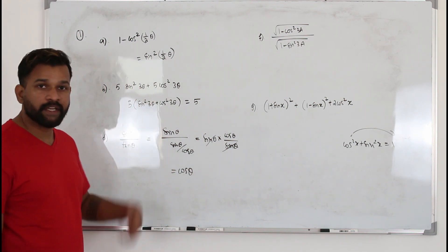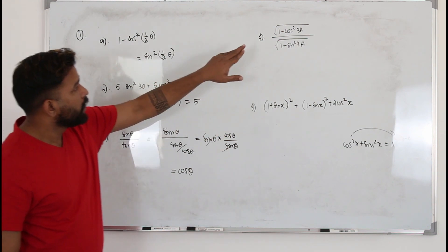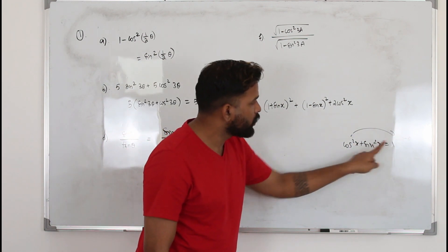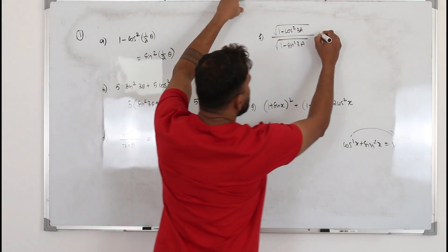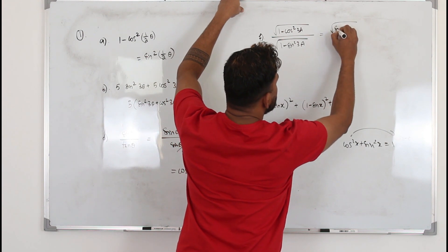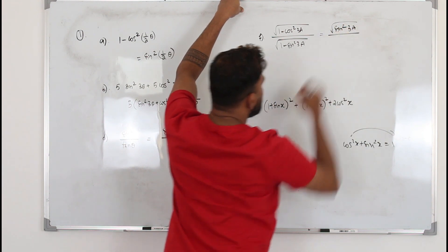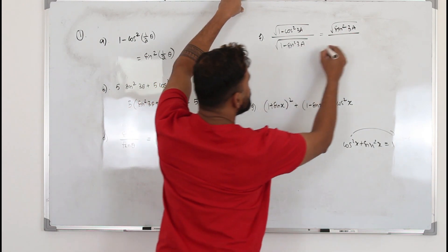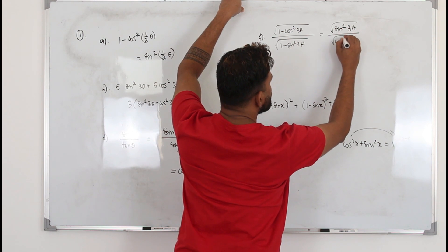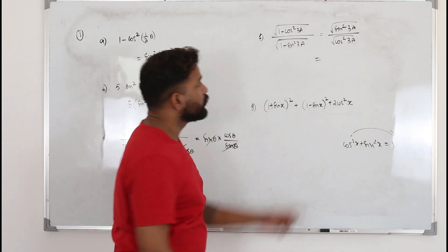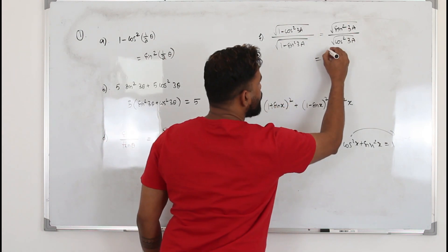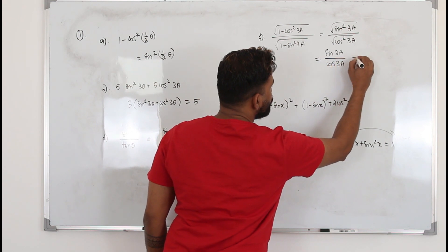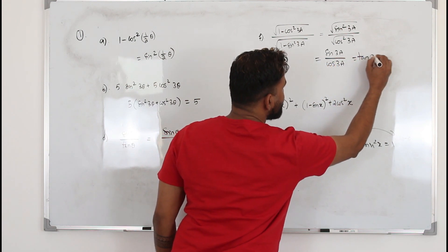For the next part, use the second identity: 1 - cos²(3a) equals sin²(3a). Replace 1 - cos²(3a) with sin²(3a) divided by cos²(3a), then take the square root. The square root and the square cancel, giving sin 3a over cos 3a, which is the same as tan 3a. Use the first identity to confirm.